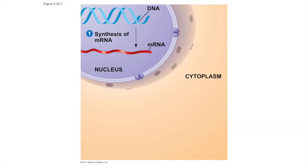In eukaryotes — you do remember who the eukaryotes are — DNA is contained in the nucleus of the cells, different from an atomic nucleus, and messenger RNA is made by copying from the DNA.